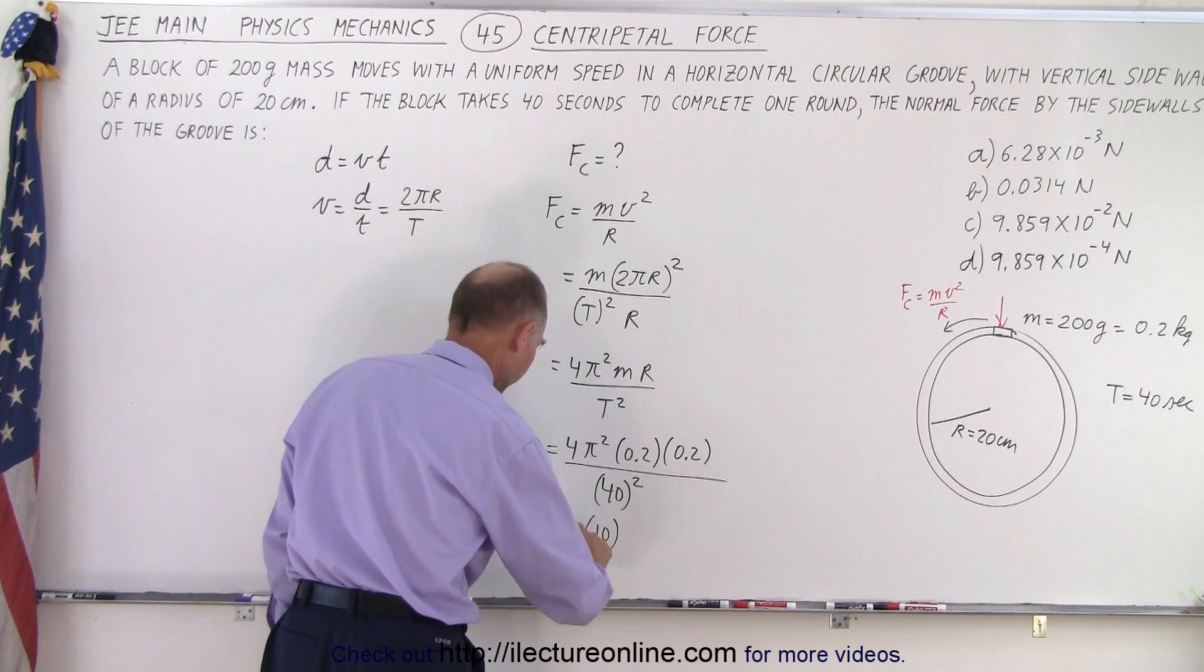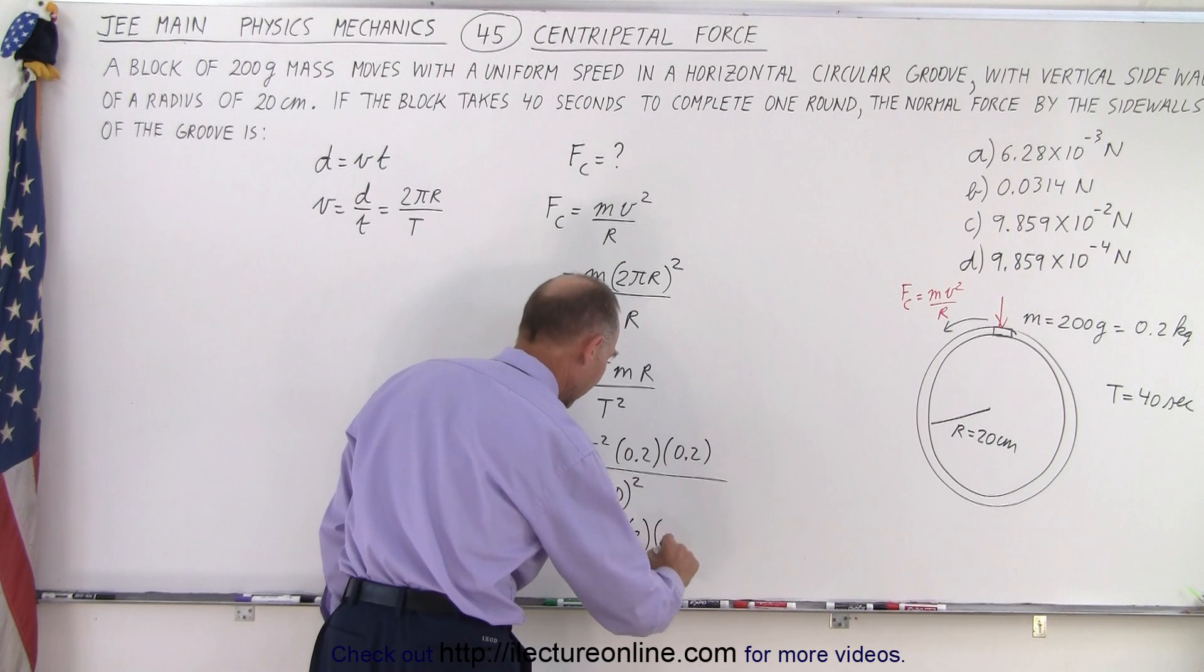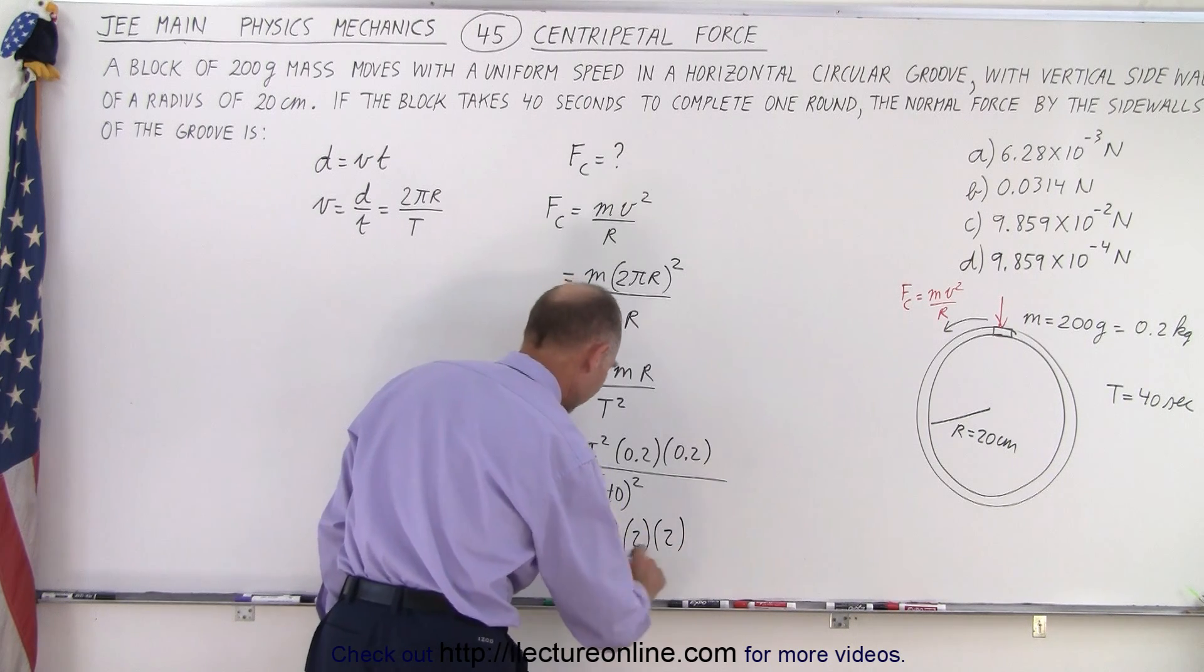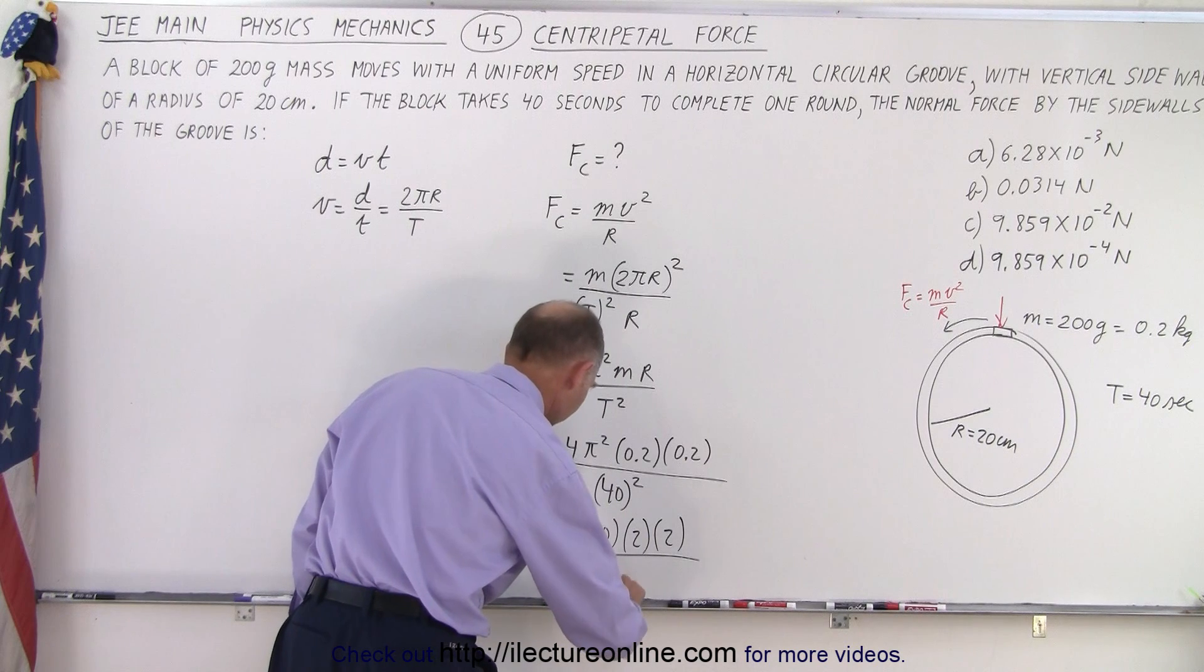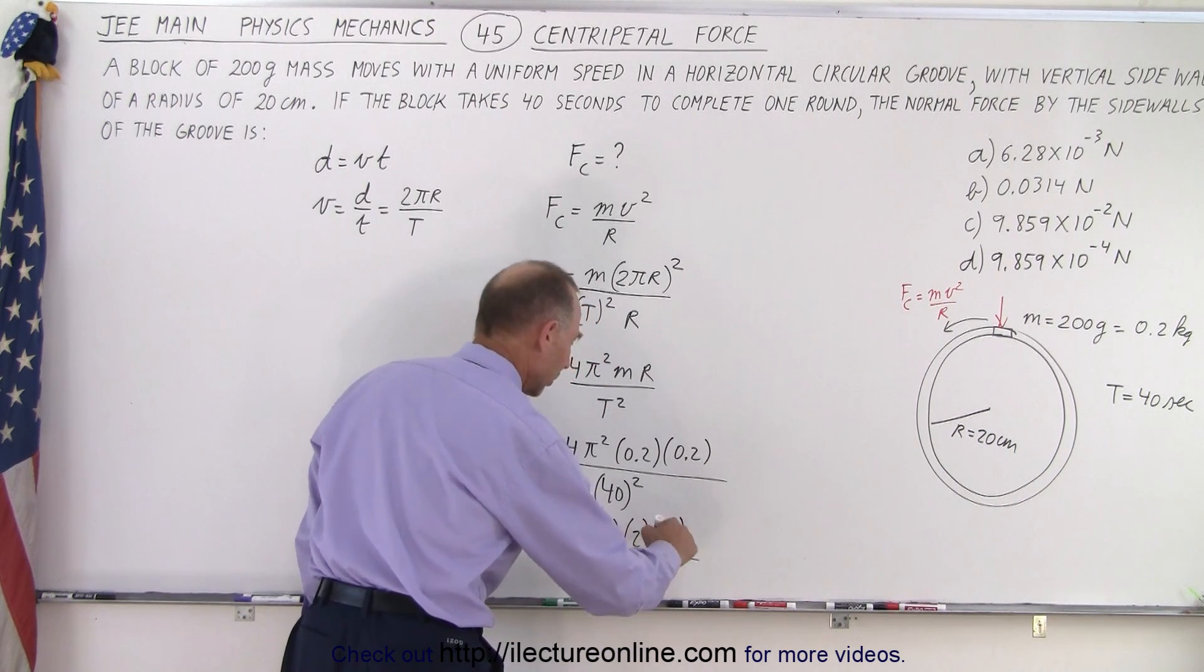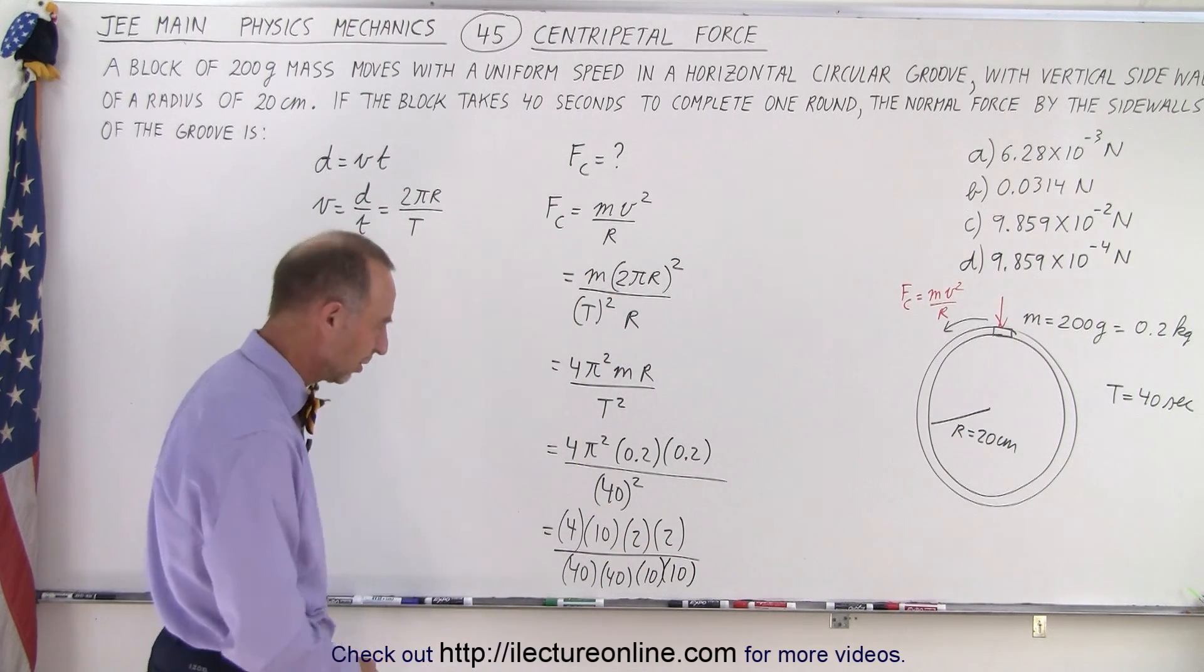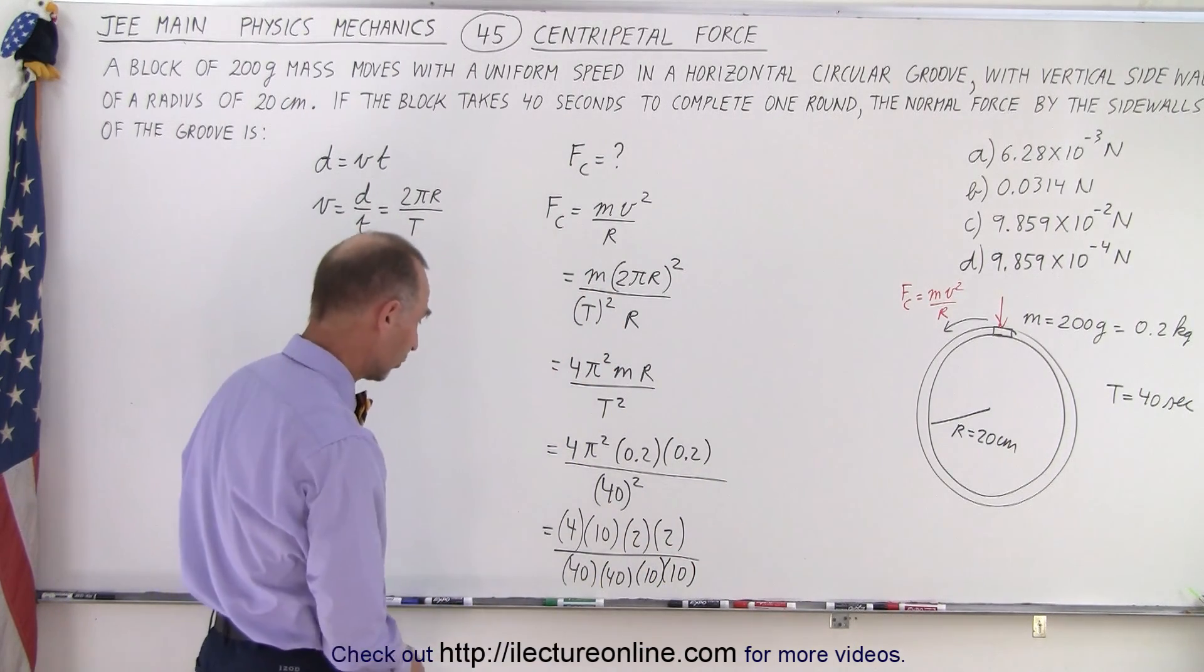We have a 4. We have 0.2. We're going to multiply that times 10 and multiply that times 10. And divide this by 40 times 40. Now remember, I multiply this times 10, so I have to divide by 10. Multiply this times 10, I have to divide by 10. So this makes things a little bit easier, so we can start using scientific notation.